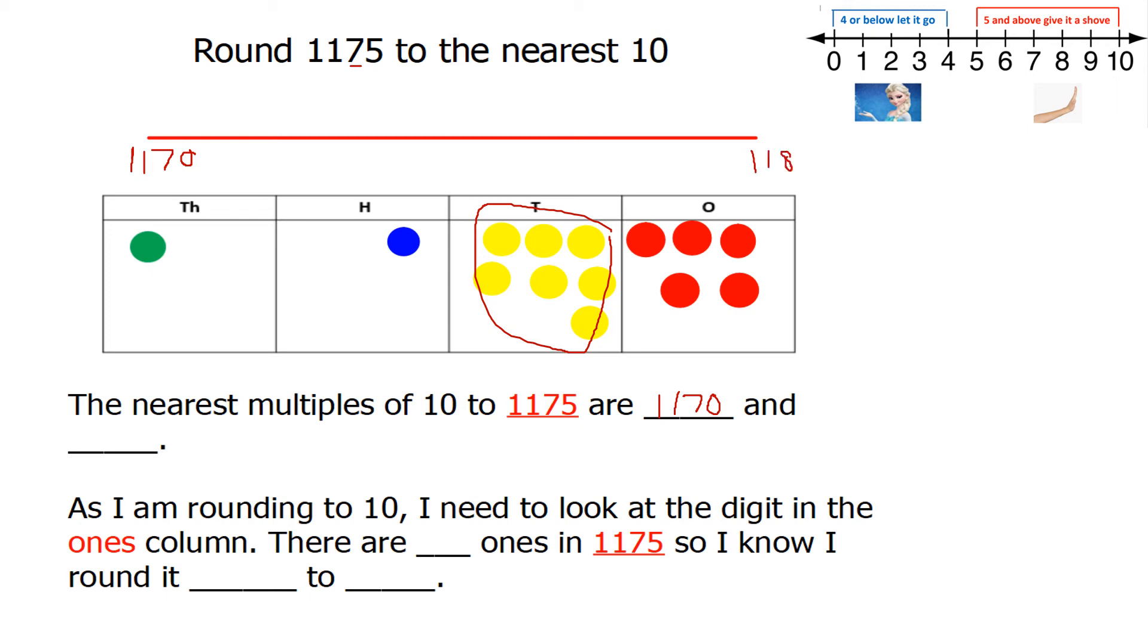So again, I'm putting them at each side, either side of our number line. And I'm going to put my number that I'm rounding where it needs to go roughly on the number line. 1175 would be directly in the middle, because 5 is half of 10.